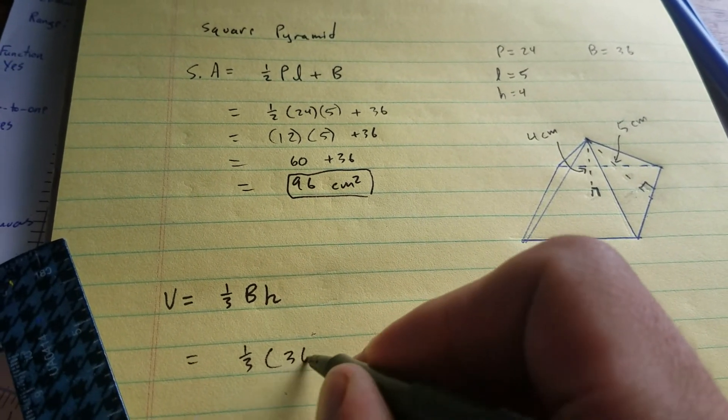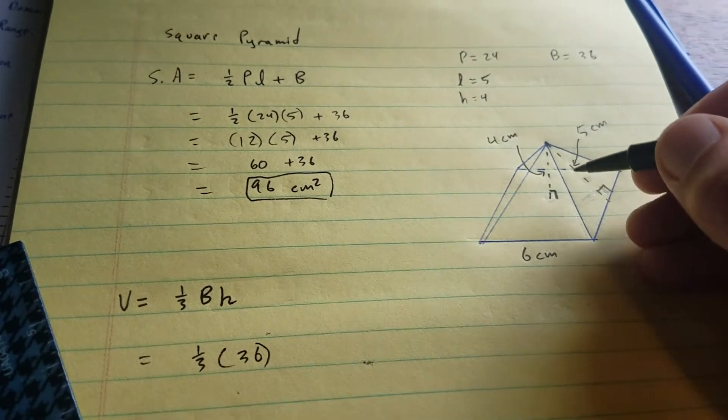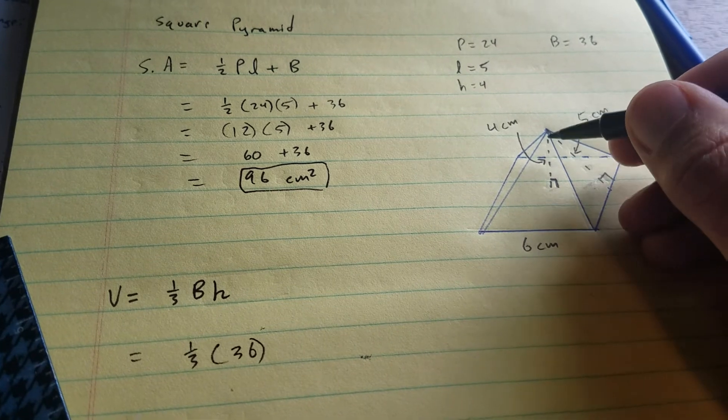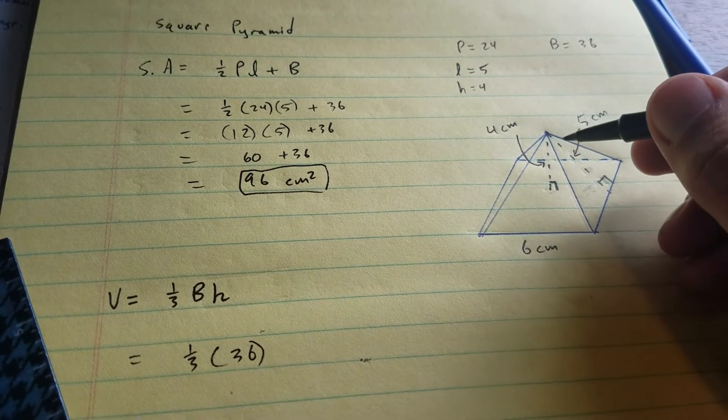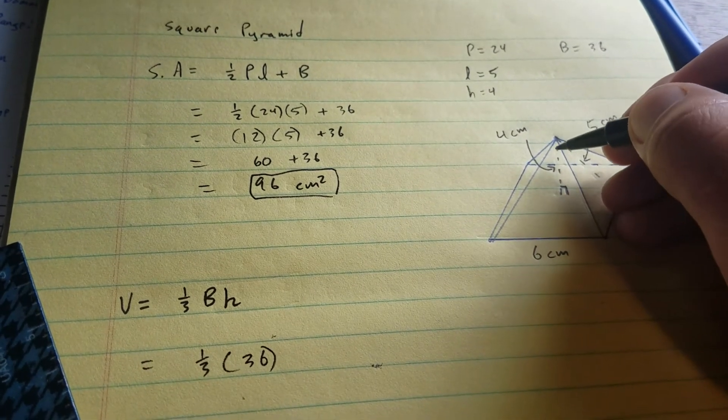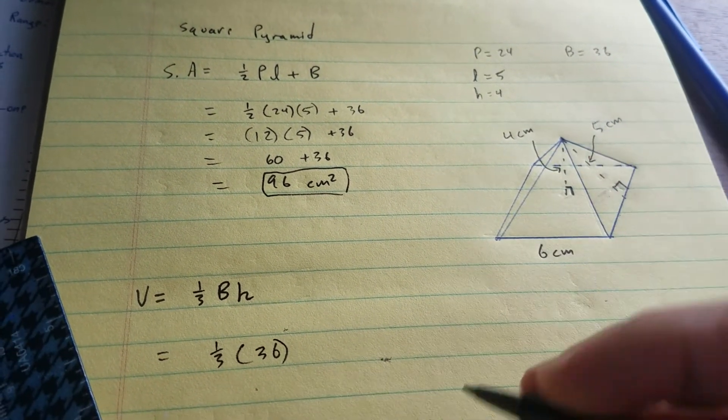Keep in mind that's the height from the base to the peak. This height is not the slant length—do not confuse them. So the height is the distance from the peak going straight down to the bottom, which is 4 centimeters.